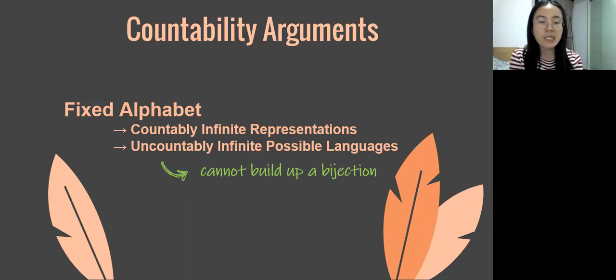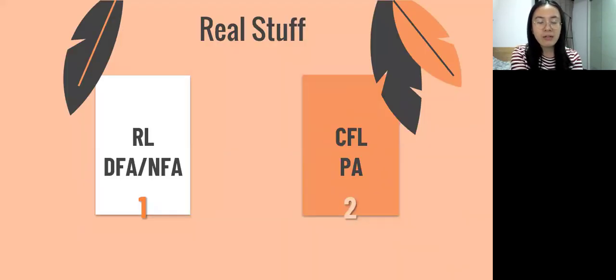Recall our previous example of a decision problem which can be transformed into a language recognition problem. Now that not all languages can be represented, we may further deduce that there must exist unsolvable problems. With this background, we will finally learn about two types of basic computation models: deterministic finite automata or non-deterministic finite automata, as well as pushdown automata. They relate to regular language and context-free language, respectively.